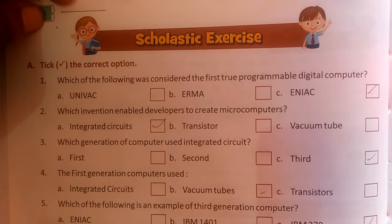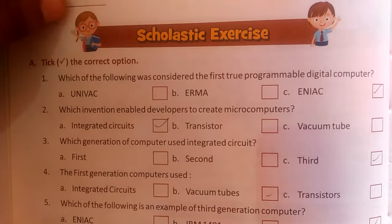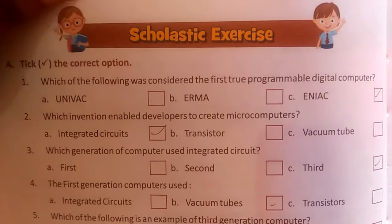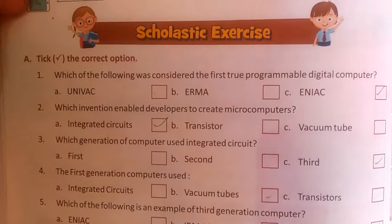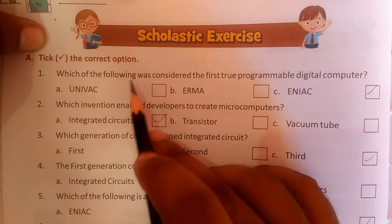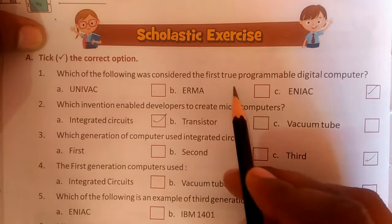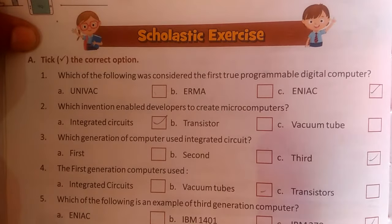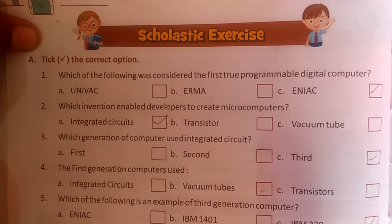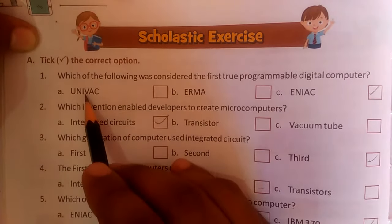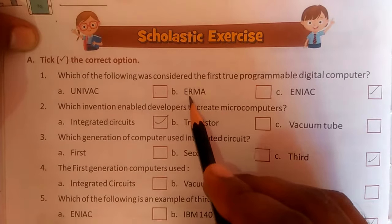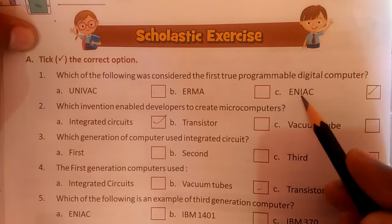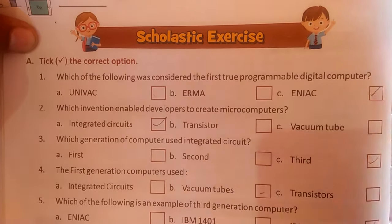Welcome and good morning students. I am going to solve the exercise of Class 5 Computer. The first question is: which of the following was considered the first true programmable digital computer? The options are UNIVAC, ERMA, and ENIAC. The answer is ENIAC.